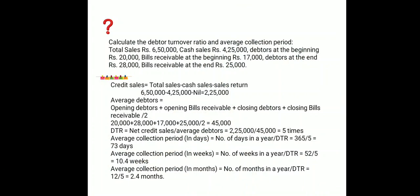The formula for Debtors Turnover Ratio is net credit sales divided by average debtor. Debtors arise only when we sell items on credit basis, so the formula uses net credit sales. Let's first calculate the credit sales.